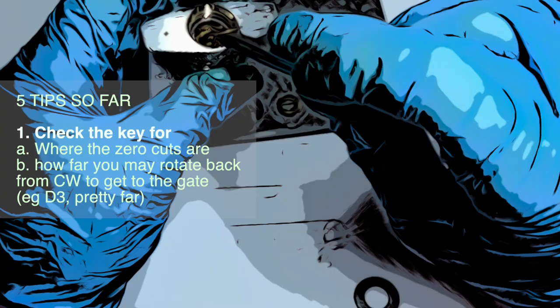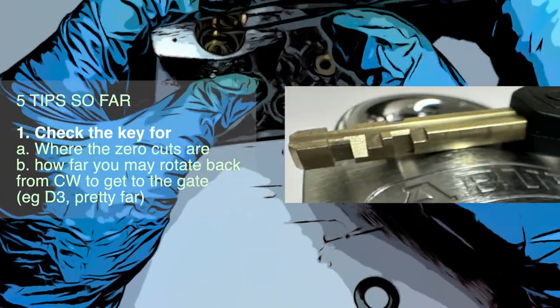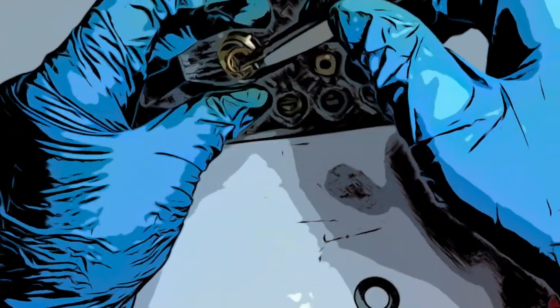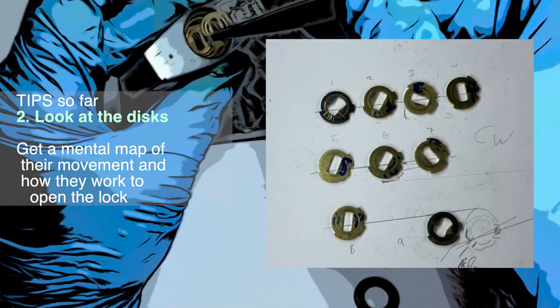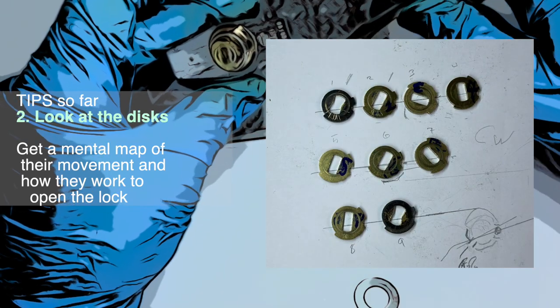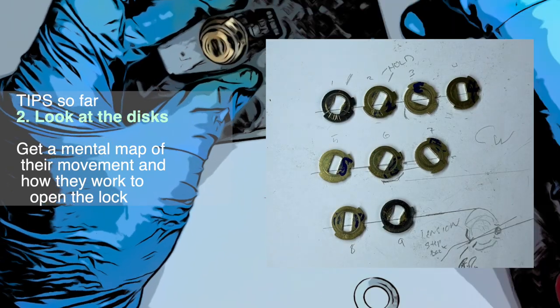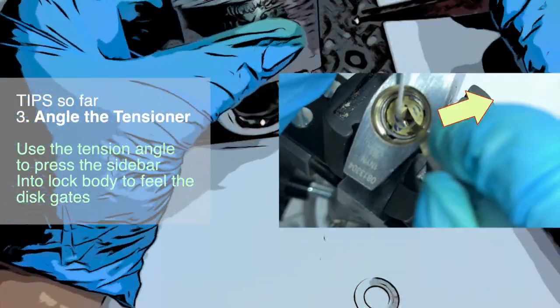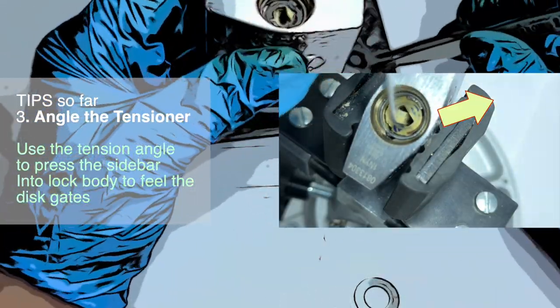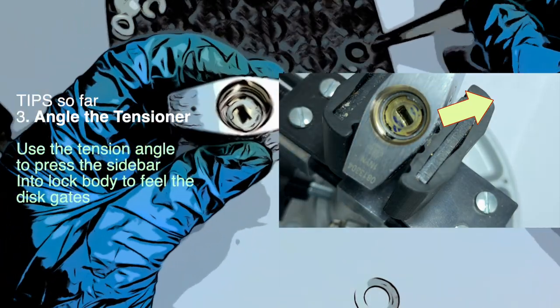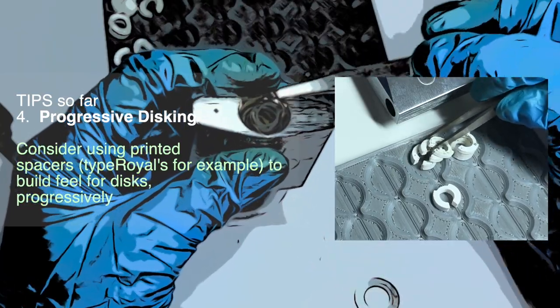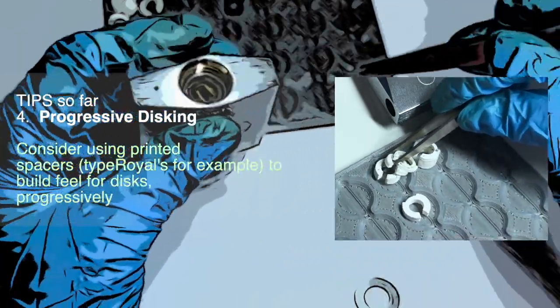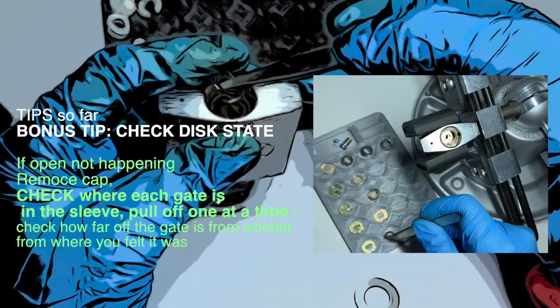Some tips here that we've got so far: check the key so you can get a sense of what the pattern is for the rotation, and definitely where the zero cuts are for tensioning after using the front disc. Take a look at the discs. Get a sense of what the mental model is inside the lock so that you can match up feeling with what you know is happening on those discs. Make sure that you're angling your tensioner so you can feel the sidebar or you won't be feeling the discs as you rotate.